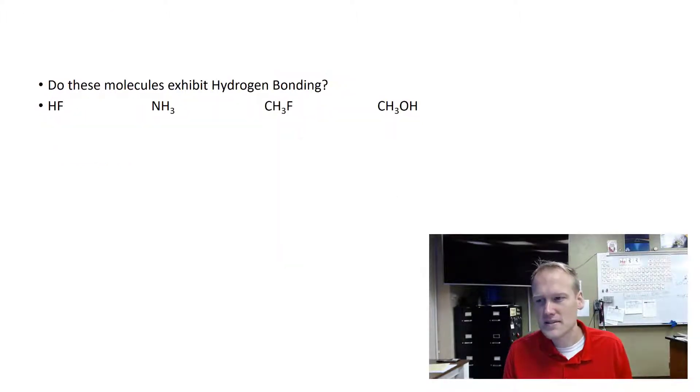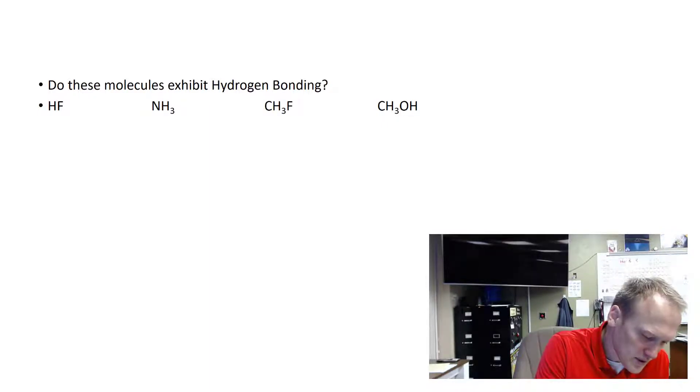So let's take a look at some examples here. Which of these molecules would exhibit hydrogen bonding? In this first one, we definitely have a hydrogen bonded to a fluorine. So this would be yes. In this one, we have a nitrogen, and that's going to be bonded to the hydrogen if we map that out. So that's going to be yes.